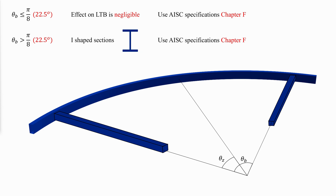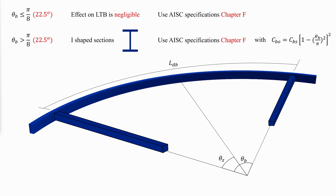For doubly symmetric I-shaped members with theta_b greater than pi over 8, the provisions of Chapter F can be used with a revised lateral torsional buckling modification factor according to a specific equation. In the AISC Specification equations, the developed length along the beam between torsional restraints, L_db, must be used instead of the straight member unbraced length, L_b.